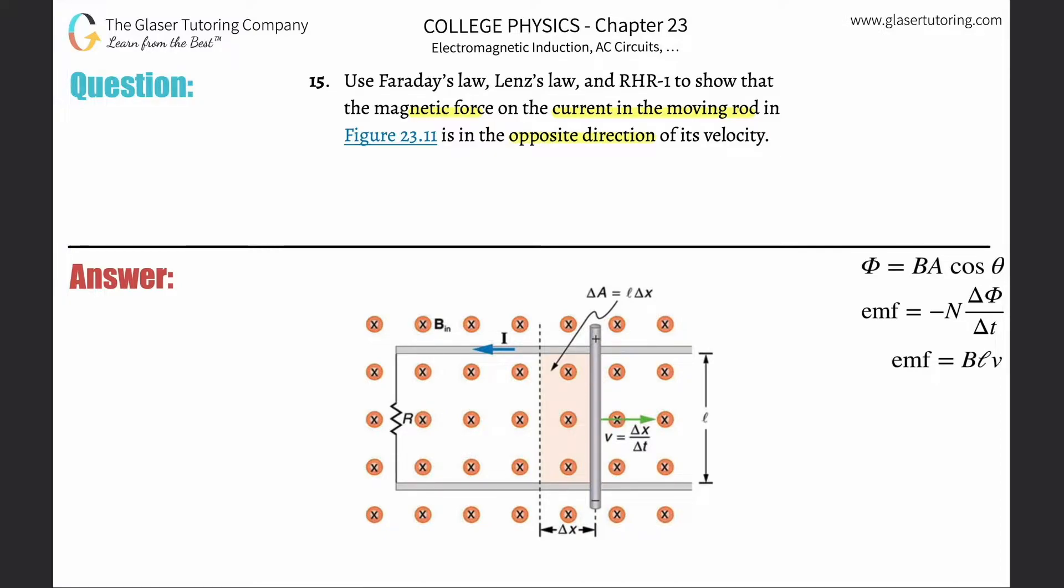We have a rod here moving in this particular direction. Pretend that these two are fixed rails, and they're connected to each other via a certain wire.